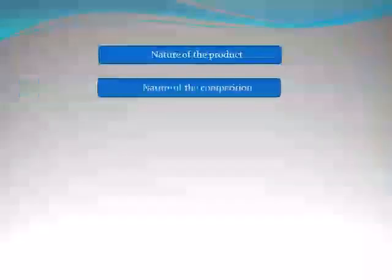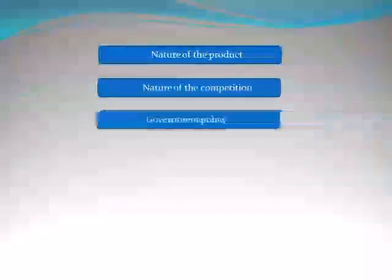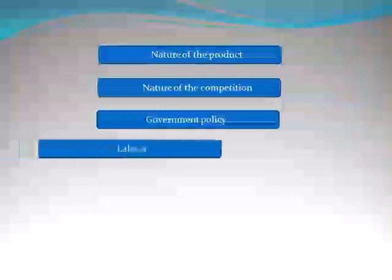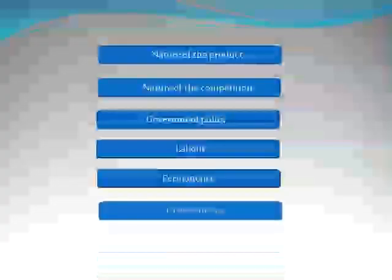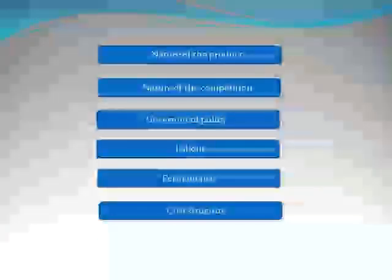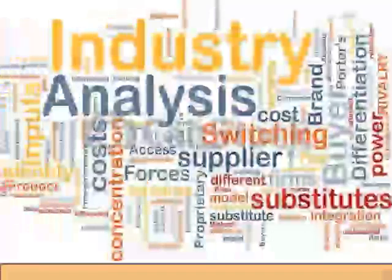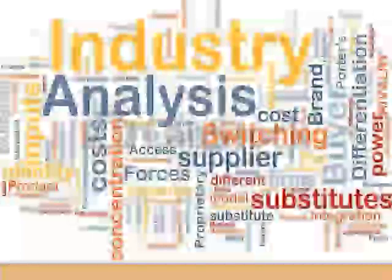To summarize, nature of the product, nature of the competition, government policy, labor, permanence, and cost structure are the various other factors to be analyzed in an industry analysis. Hope all are clear with the topic. In the next session, we will deal with the last part of industry analysis. Thank you.